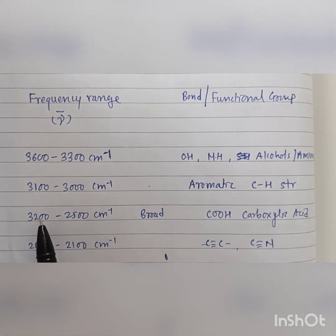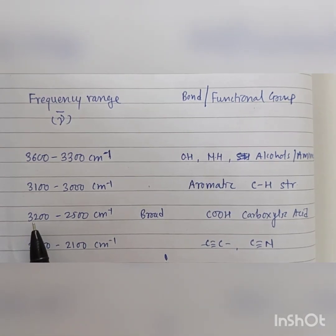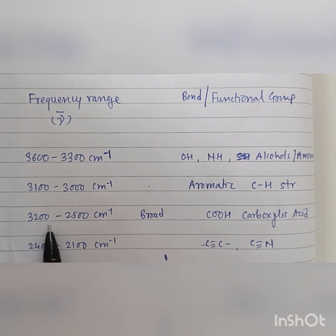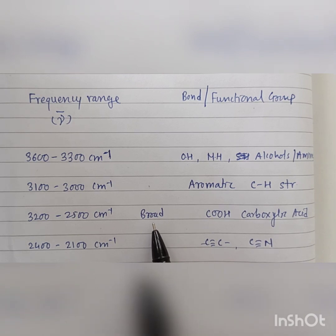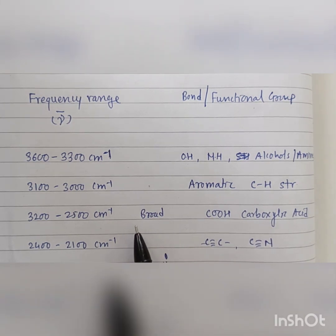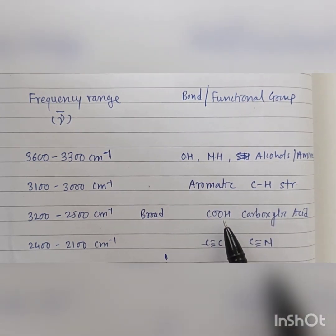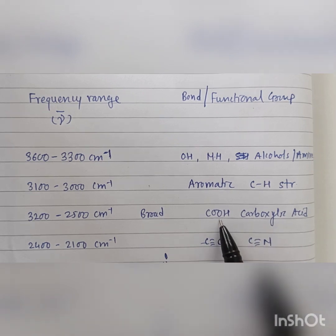The next important range of IR frequency is 3200 to 2500 centimeter inverse. If in this range there is a broad peak, then that peak is due to the carboxylic acid group.